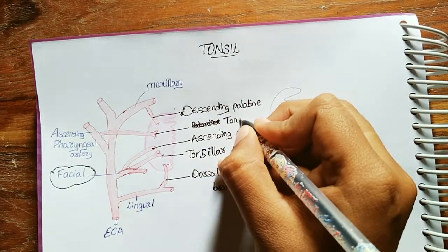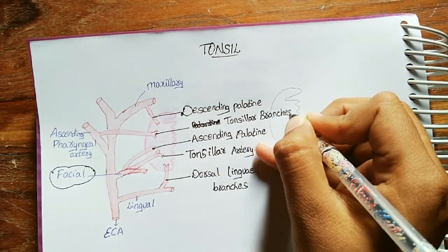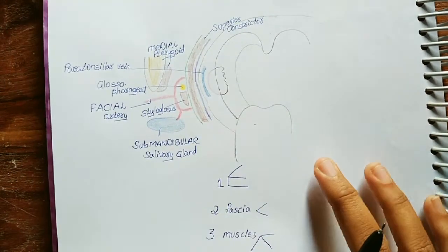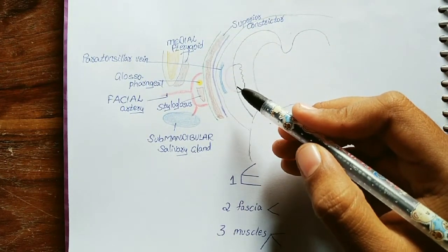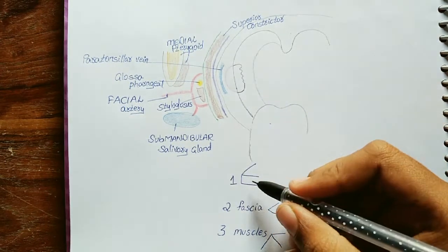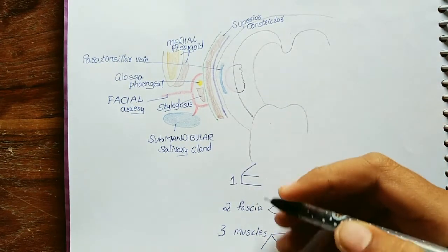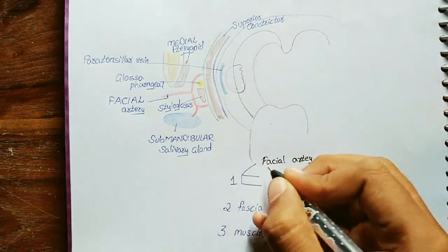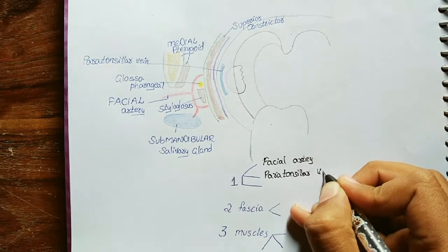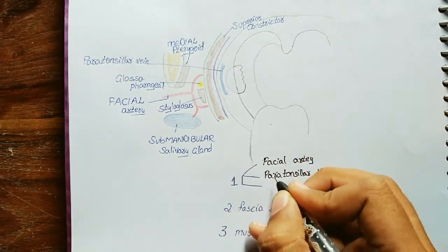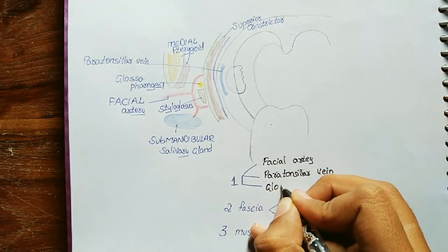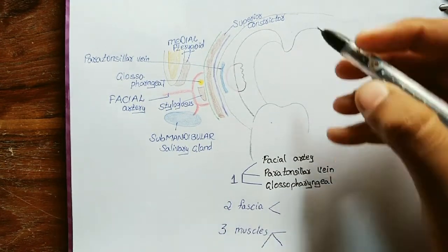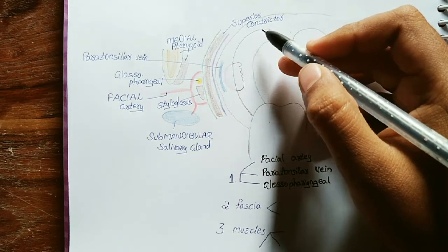Coming to the bed, each gland should have an artery, vein, and nerve supply. So as the mnemonic goes, one, two, three: one is artery, that is facial artery; one vein, that is paratonsillar vein; and nerve is glossopharyngeal nerve. And two fascia covering the superior constrictor muscle.